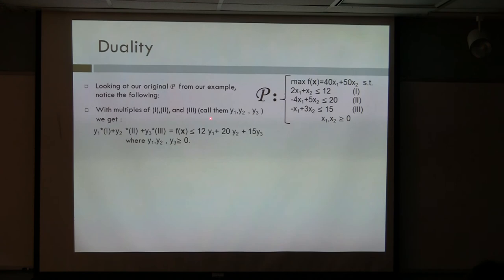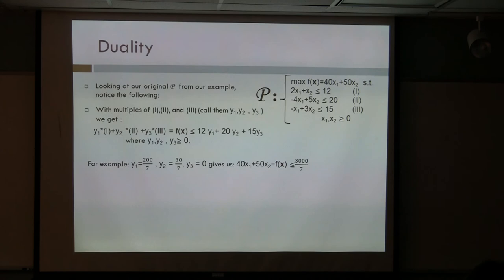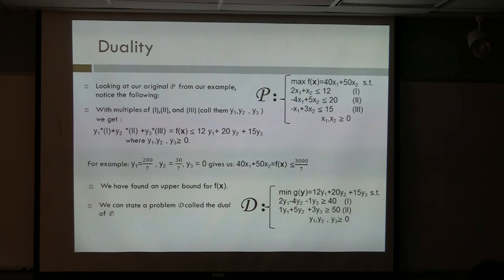We're going to get back the objective function bounded by this linear function of those three variables. For example, if we choose 200 over 7, 30 over 7, and 0, then we get back our objective function bounded on the right-hand side by 3,000 over 7. So we found an upper bound for a function. This is what is called the dual problem. And if you look closely, you can realize that it's basically the negative transpose of the primal problem.